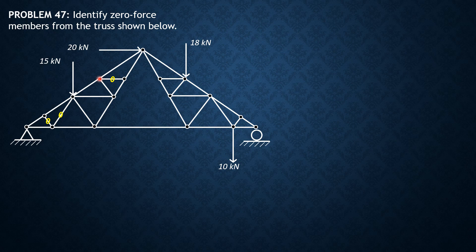We then proceed to the next joint. There are four members, but because the previous one is zero, it's like there are only three. The two are collinear — therefore this member carries no force. Then at the following joint, there are again four members, but one being zero makes it effectively three. The two are collinear, so this member is unique and carries no force.